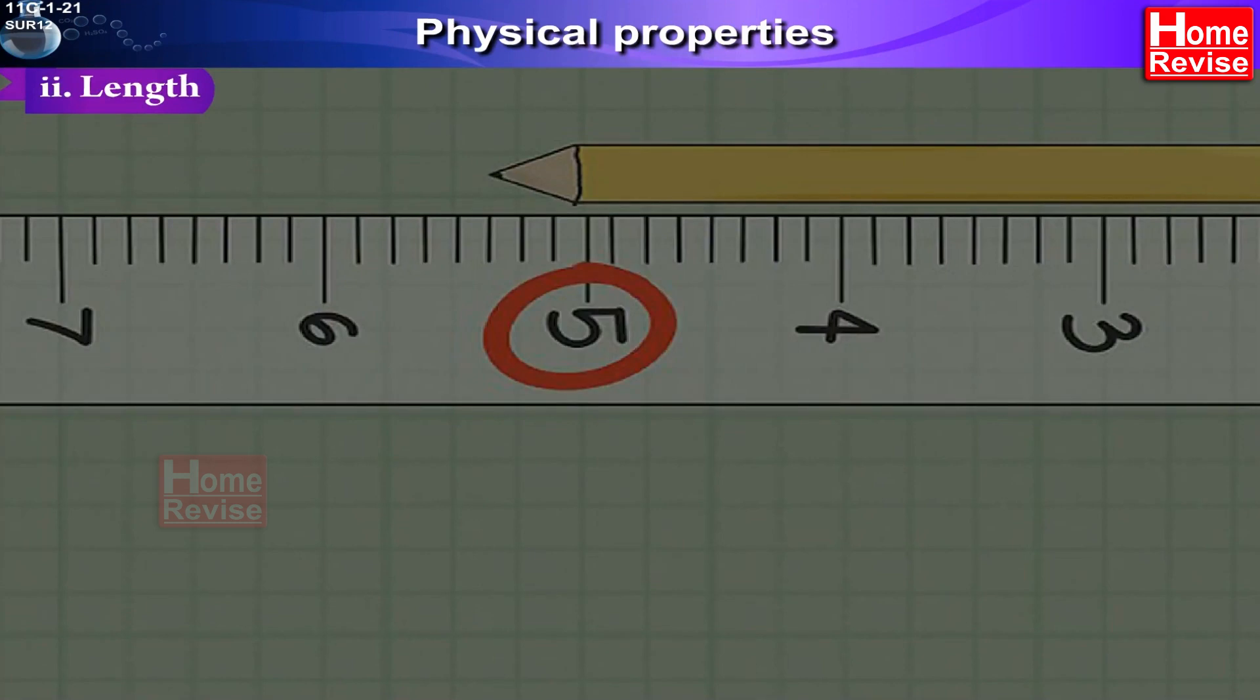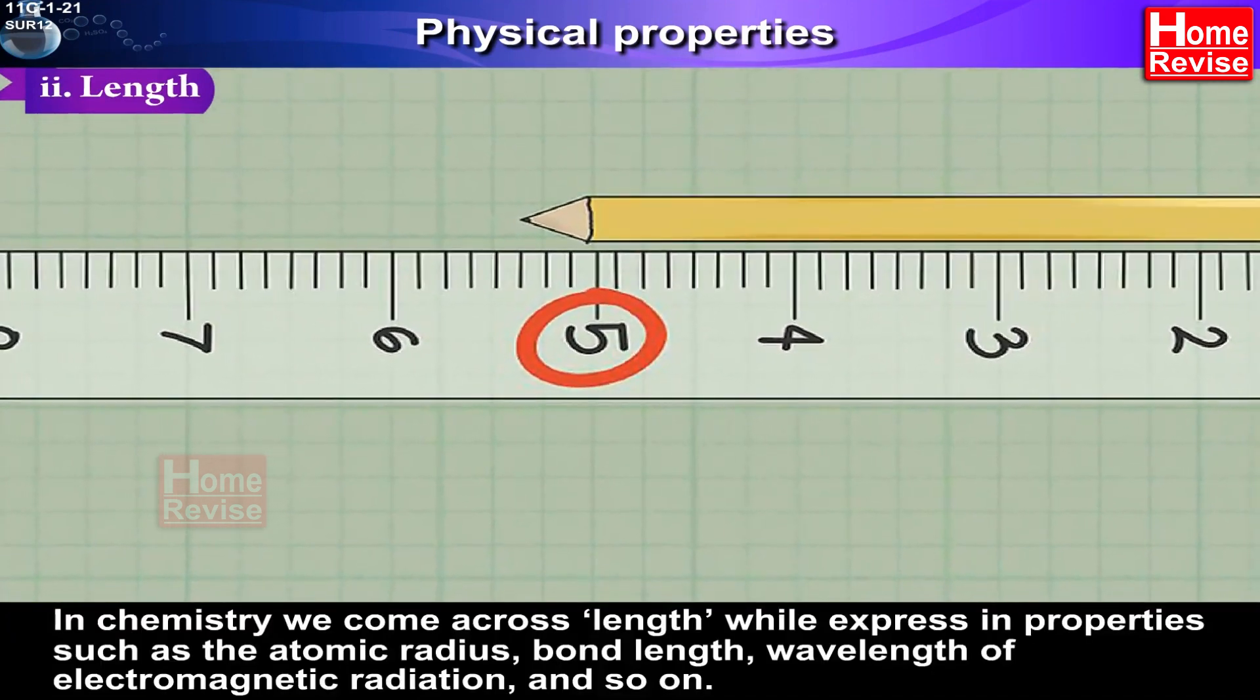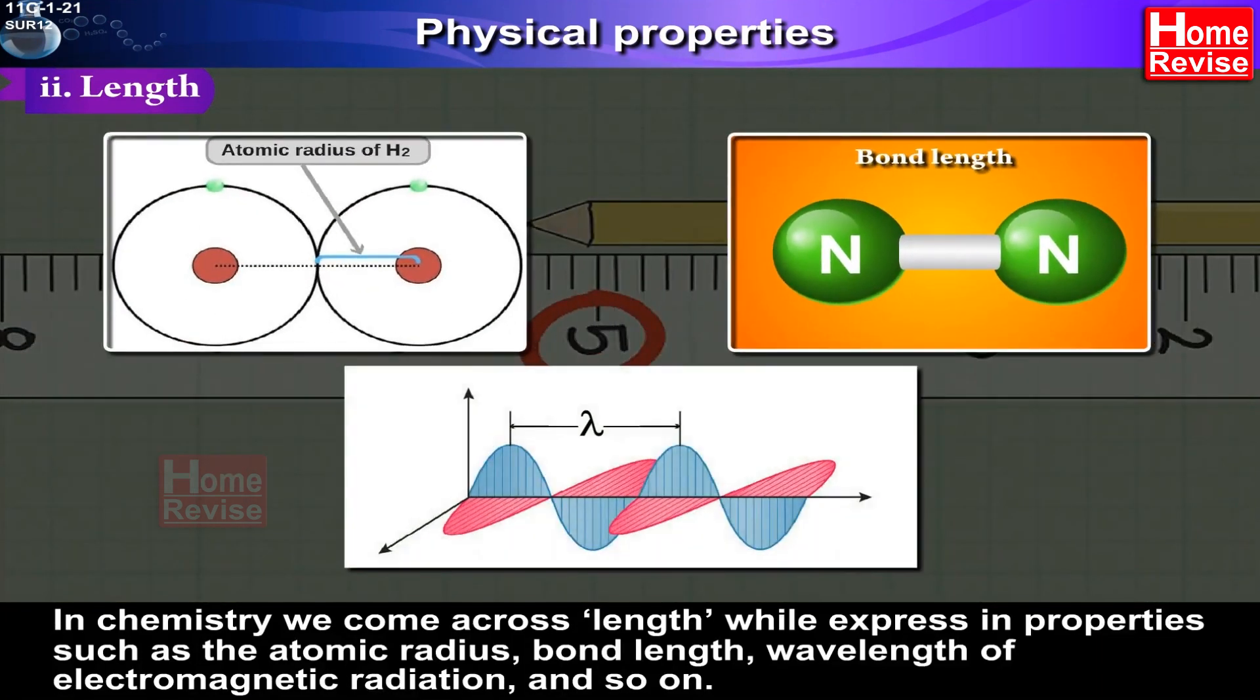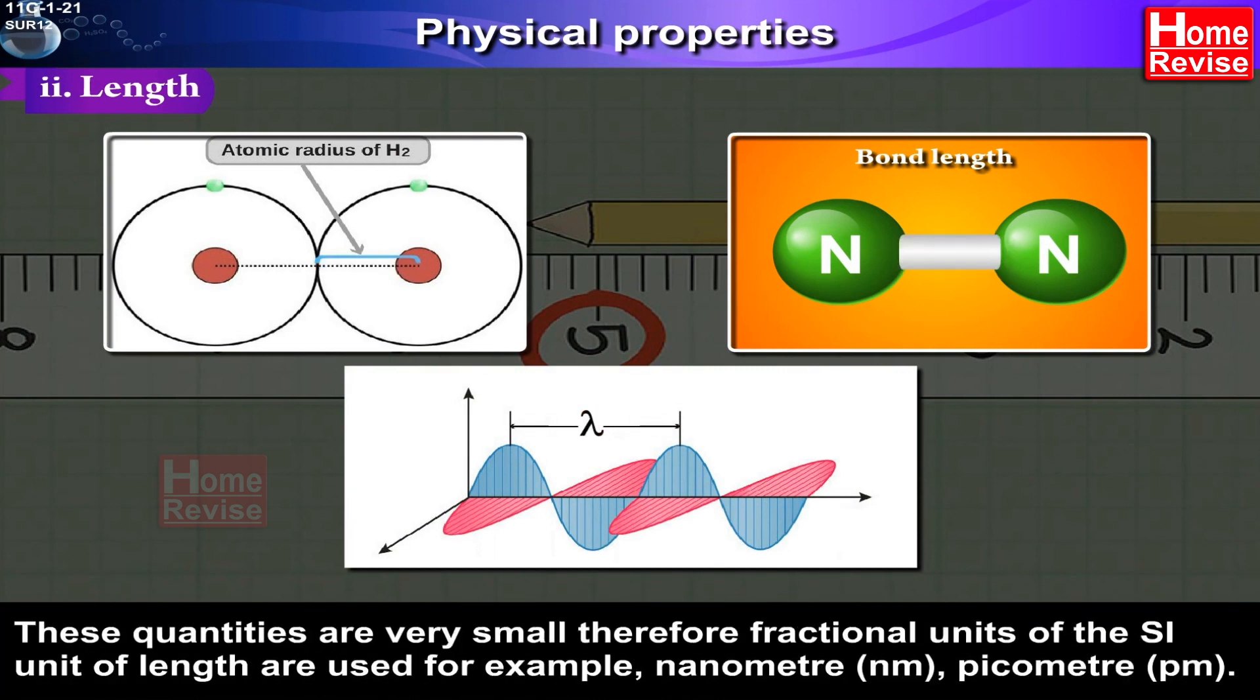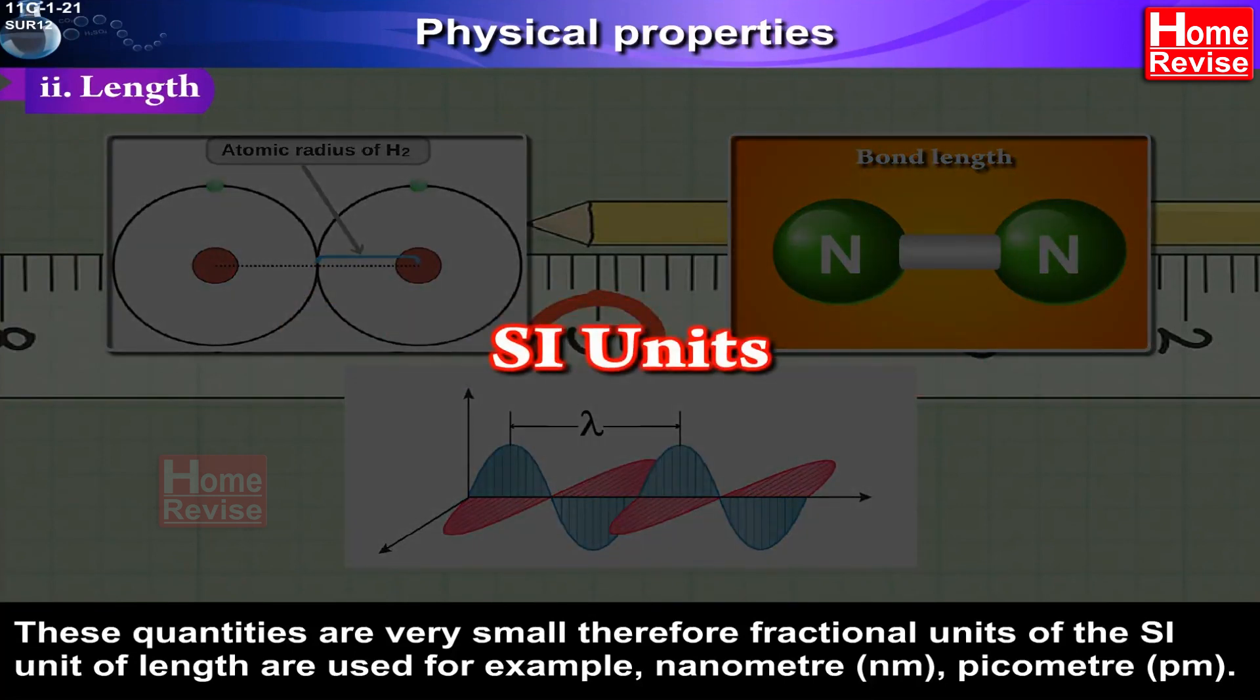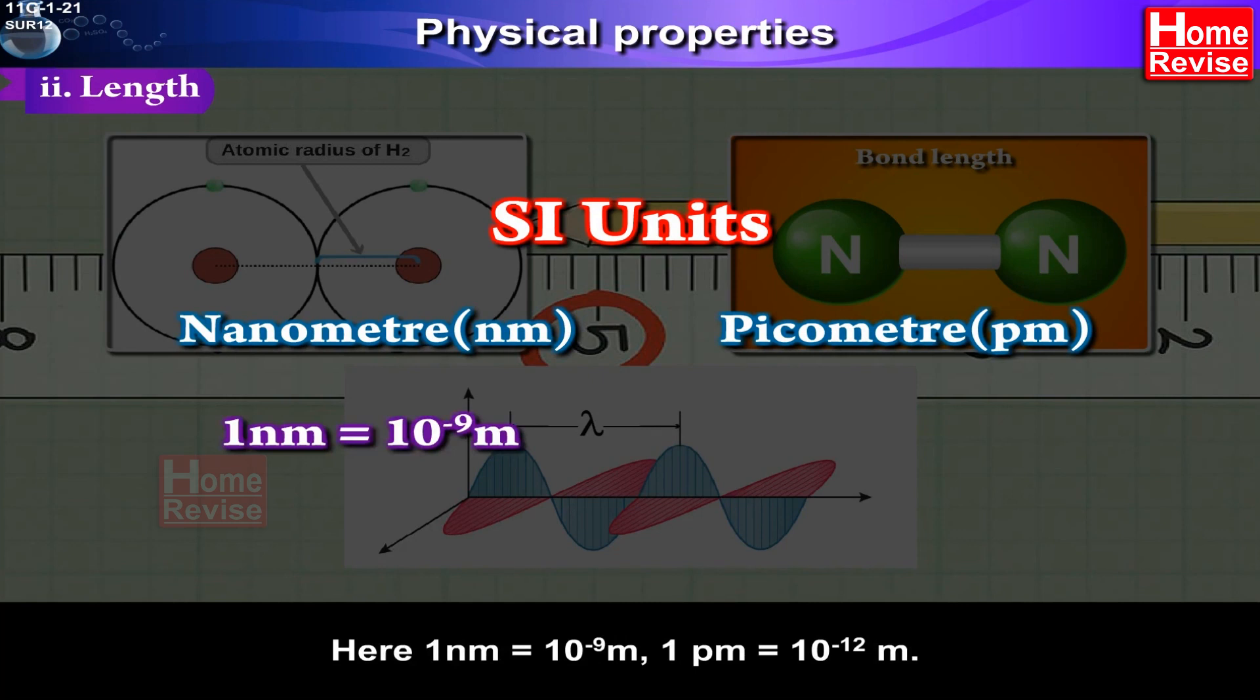Length. In chemistry we come across length while expressing properties such as atomic radius, bond length, wavelength of electromagnetic radiation, and so on. These quantities are very small, therefore fractional units of the SI unit of length are used, for example, nanometer (nm) and picometer (pm). Here 1 nanometer is equal to 10 raised to minus 9 meter, 1 picometer is equal to 10 raised to minus 12 meter.